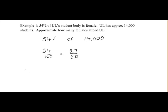So we're going to multiply 27 over 50 by 14,000 over 1. And that should give us the number of female students in UL. So 27 multiplied by 14,000 is 378,000.